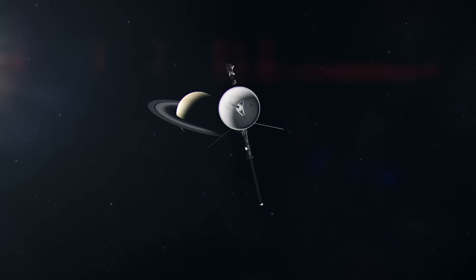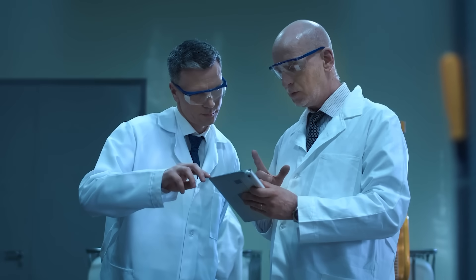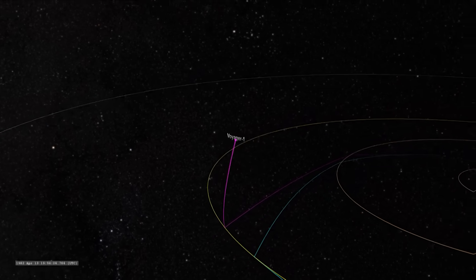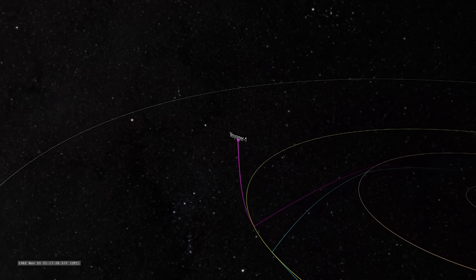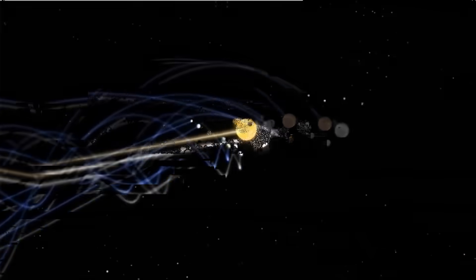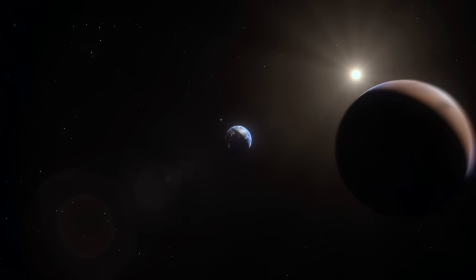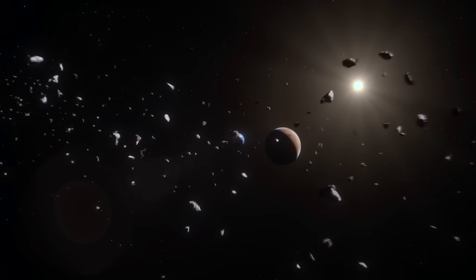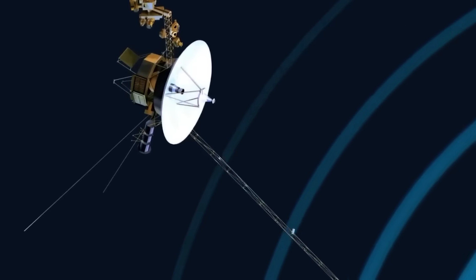Voyager 1, the furthest traveled human-made object, has once again stunned the scientific community. After decades drifting through the vast silence of interstellar space, the ancient spacecraft recently transmitted a data stream so unusual, so mathematically precise, and so structurally consistent that it ignited immediate interest across scientific fields.